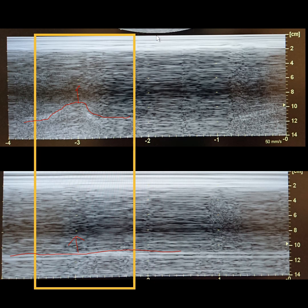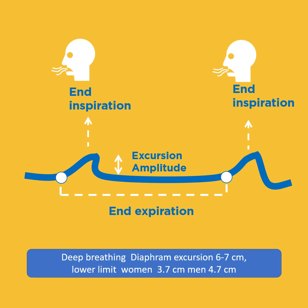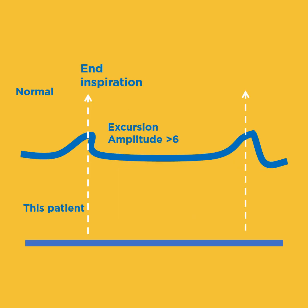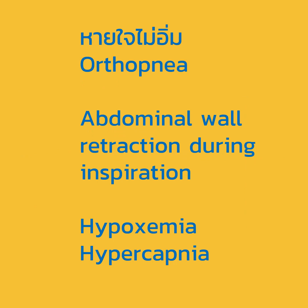The oxygen saturation is 95%, which is not normal but not critically low either, because the lungs themselves are fine. This drawing illustrates the concept: during inspiration, there should be an excursion amplitude of six to seven centimeters in a normal person. In this patient, there is no bump at all, so we suspect diaphragmatic paralysis.